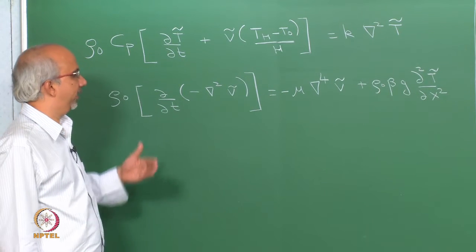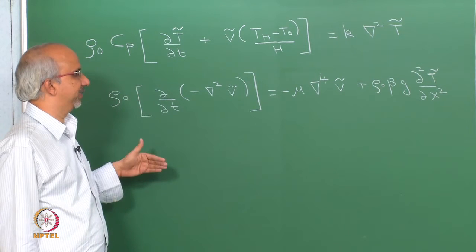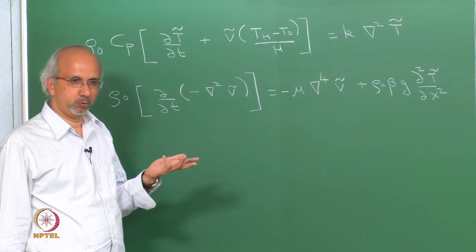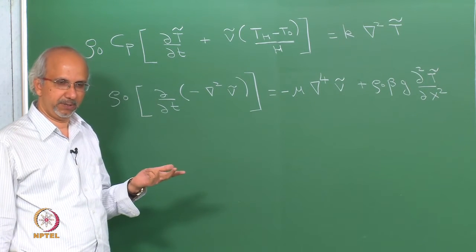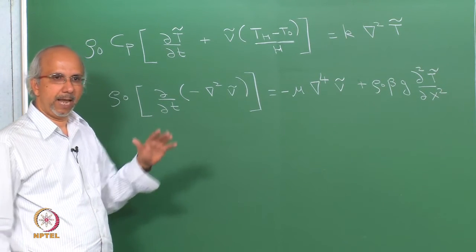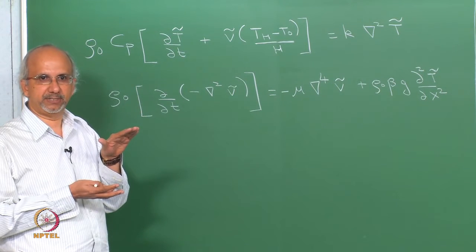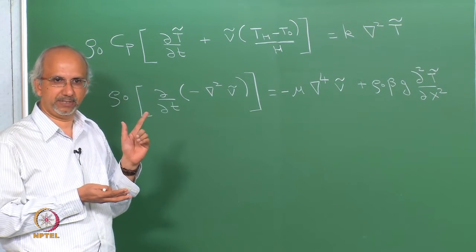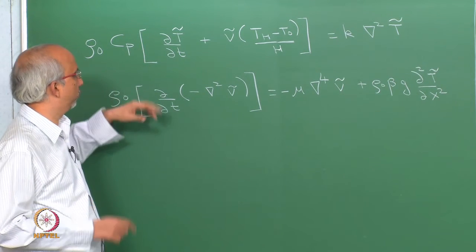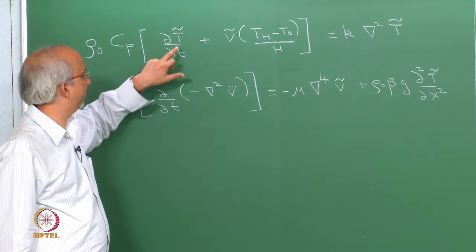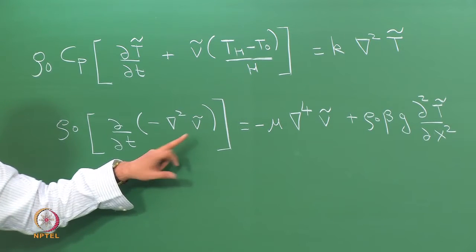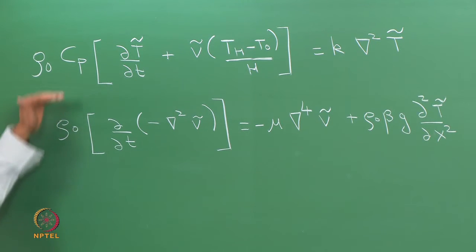When you do this you get a set of linearized equations. We had perturbations on u (the x-component of velocity) and on pressure P tilde, and we eliminated those two variables. We reduced the system to two equations: one on the temperature perturbation and one on the vertical velocity component perturbation. This is what we derived in the last class.